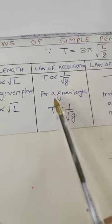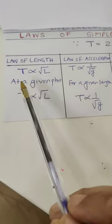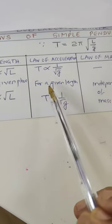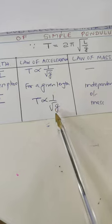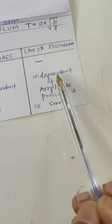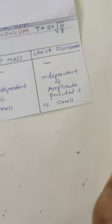For at a given place or for a given length: at a given place period is directly proportional to square root of its length. For a given length period is inversely proportional to square root of acceleration due to gravity. Period is independent of mass. Period is independent of amplitude, provided it is small.